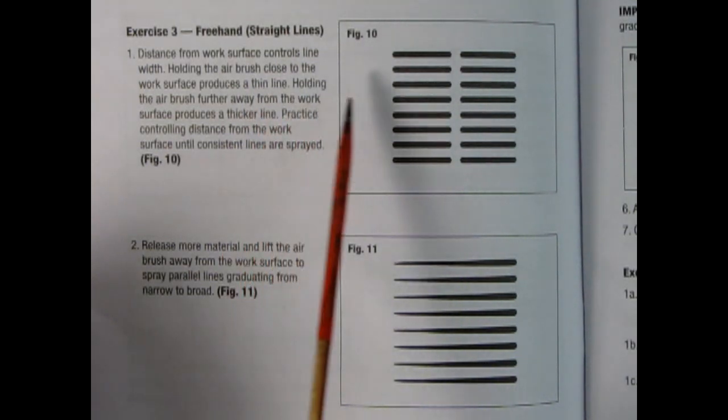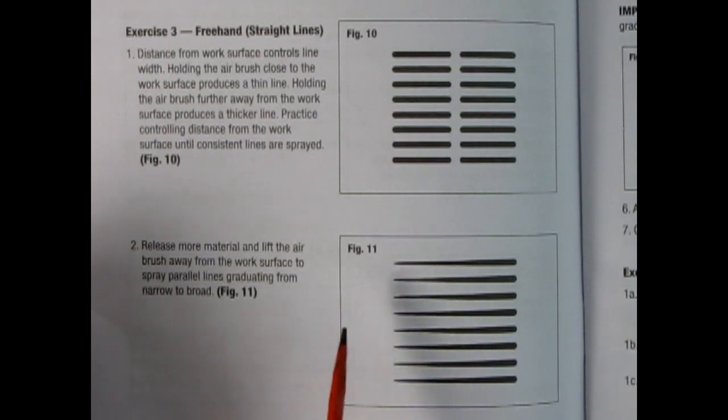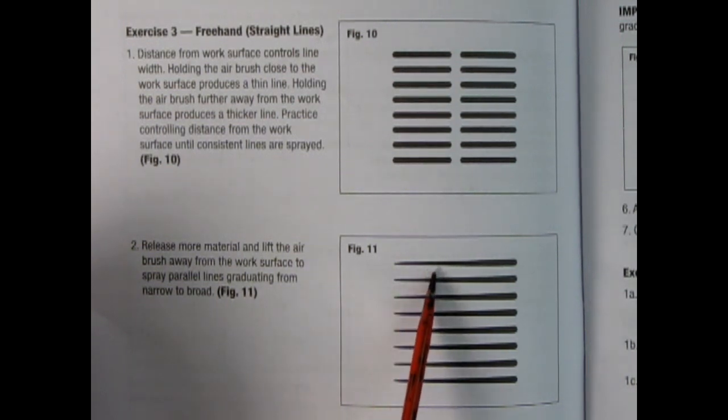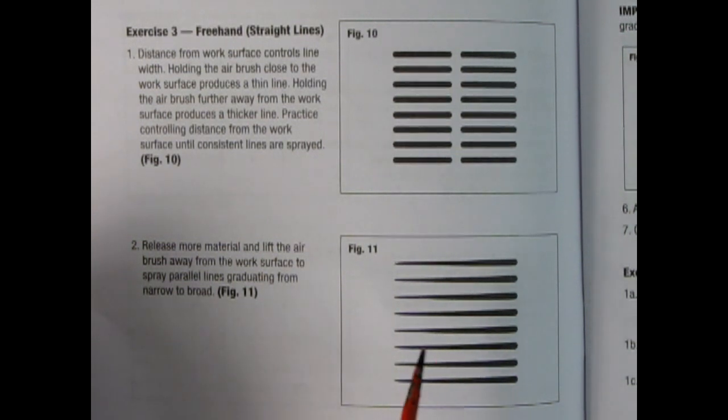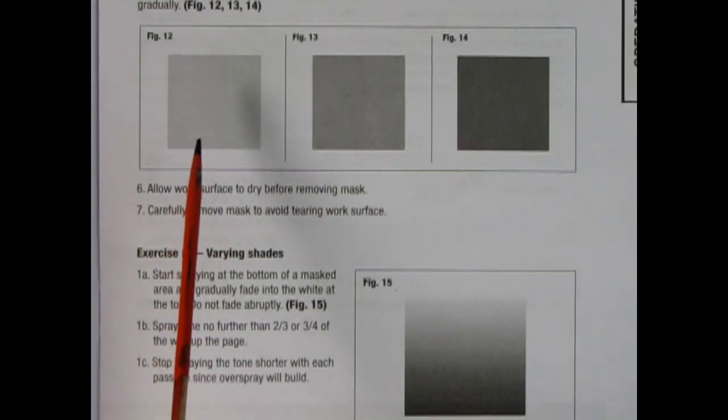The next exercise is freehand straight lines to get your consistency right. Then there's one to do tapered lines. That would be to spray and move across and pull the trigger back as you're moving. So I was right - when you pull the trigger back, like my old Paasche airbrush, you slide the needle back inside the airbrush and it opens up to a wider hole opening.